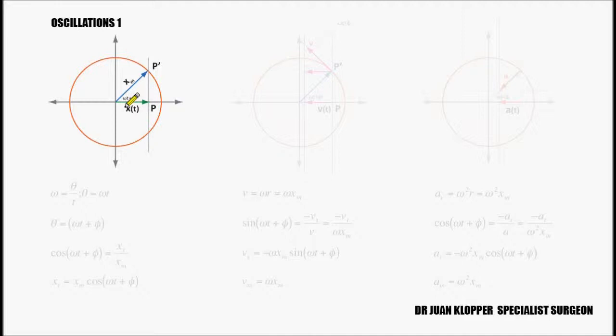At these two sides — positive and negative xm — is where you're going to find the maximum acceleration. First it decelerates at positive xm, and then accelerates again as it moves away. And acceleration is actually going to be zero at the origin.